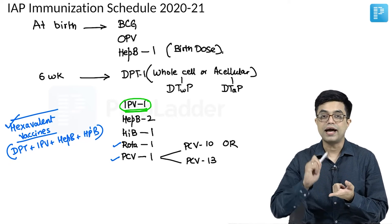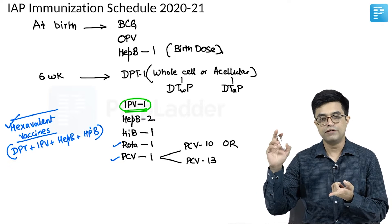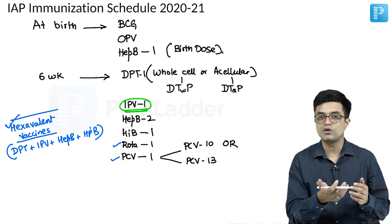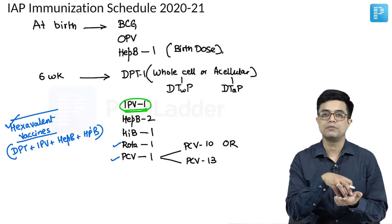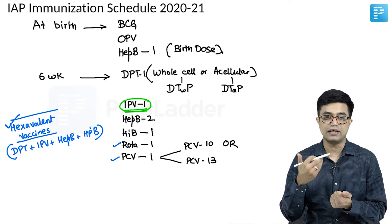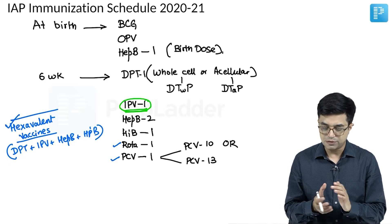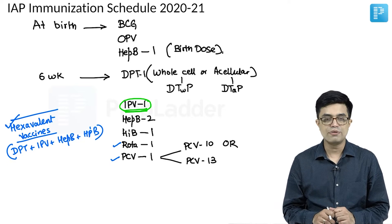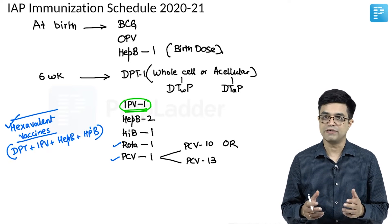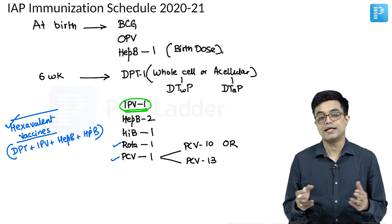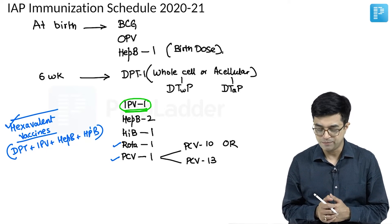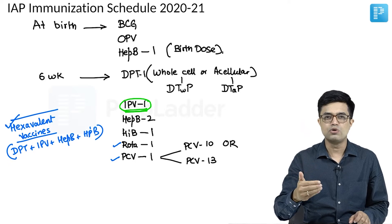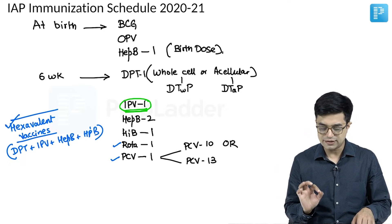What is important is that IPV must be given — either fractionated as part of the national immunization schedule with OPV, or full-dose IPV alone without fractionation, where OPV is not required. Pentavalent is not available in the private sector; it is only available through government channels, which is why pentavalent is not part of the IAP schedule. IAP gives the option to use the hexavalent form where vaccines are combined, or individual ones if all are available.